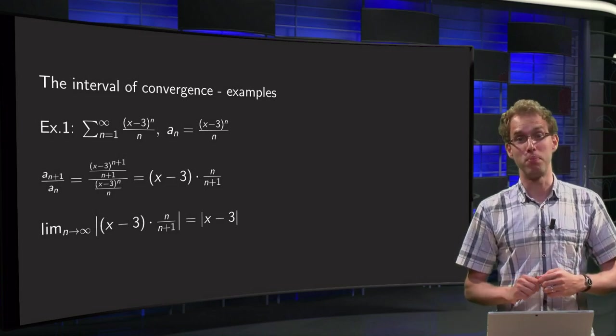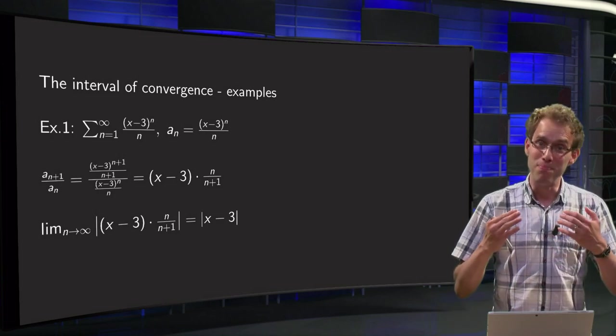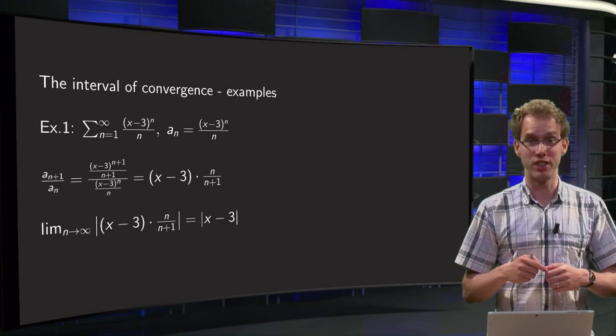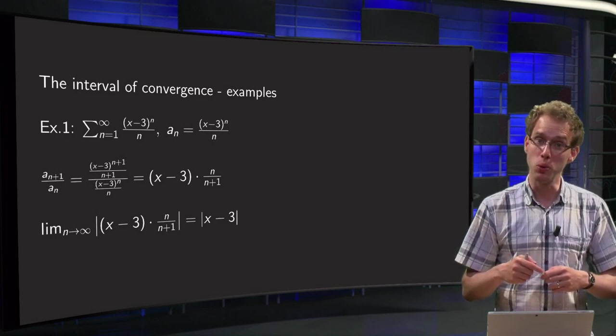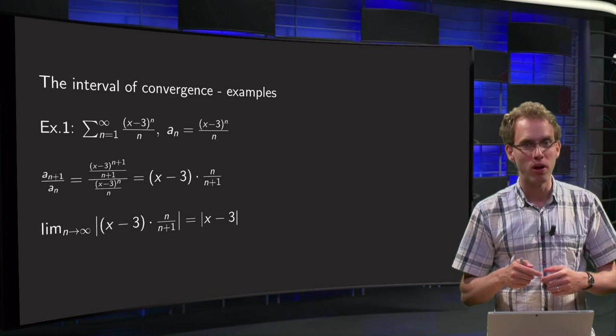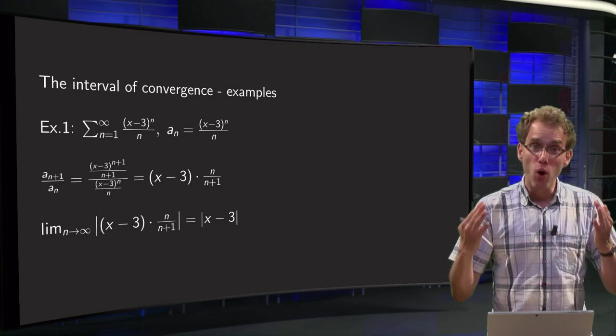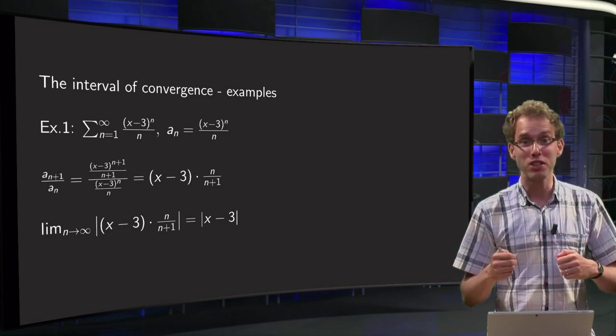A power series depends on the parameter x. This means that convergence of the series depends on the value of x too. That looks awful! How can you determine all values of x for which your power series converges?